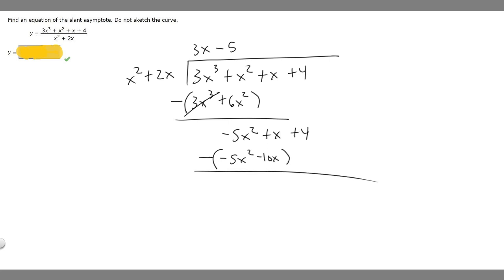And so minus 5x squared minus negative 5x squared is just going to cancel. Then x minus negative 10x is just the same thing as x plus 10x, so it's 11x plus 4. And then we bring down the 4, so plus 4.